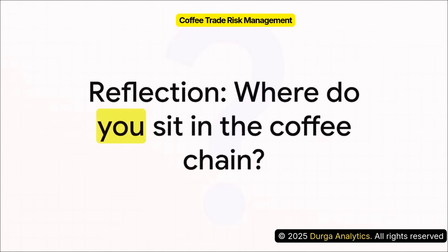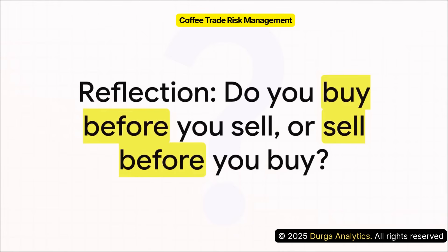Theory's great, but now let's make this personal with a few reflection questions. First, identify your specific role — are you a producer, an exporter, a trader, or a roaster? Be precise. Next, think about your operational timing: does your business model require you to purchase coffee and hold it before you have a final sales contract, or do you secure a sale first and then go and find the coffee? This simple question reveals the fundamental nature of your initial risk exposure.